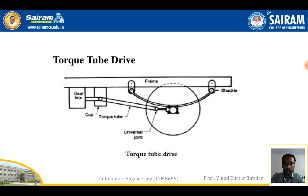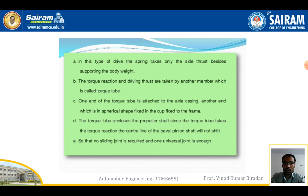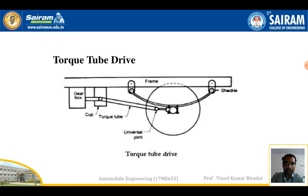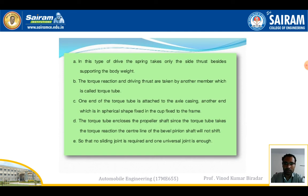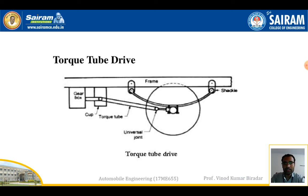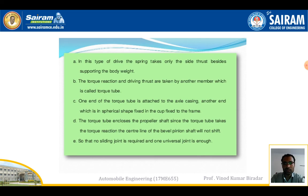One end of the torque tube is attached to the axle casing; the other end has a spherical shape fixed in a cup attached to the frame, shown as a dotted line. The torque tube encloses the propeller shaft and takes the torque reaction to the centerline of the bevel pinion shaft, so the pinion shaft does not shift. Therefore, no sliding joint is required — only one universal joint — whereas the Hotchkiss type uses both a sliding joint and a universal joint.